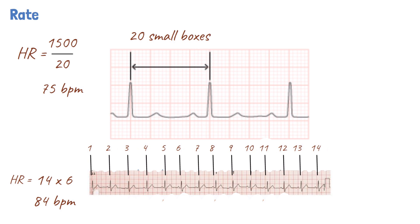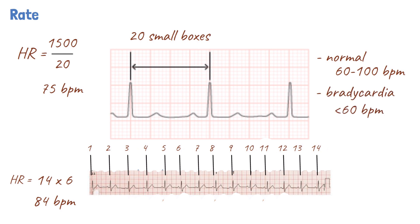In an average adult, the normal heart rate is taken to be 60 to 100 beats per minute. Bradycardia occurs when the heart rate is less than 60 beats per minute, while tachycardia is when the heart rate is greater than 100 beats per minute.